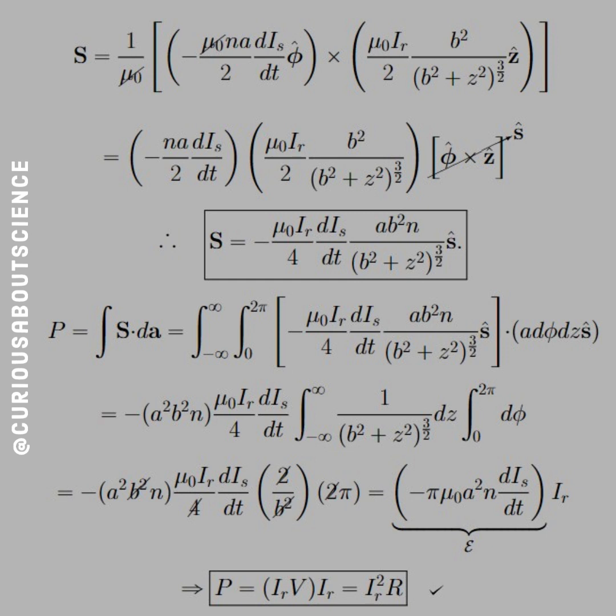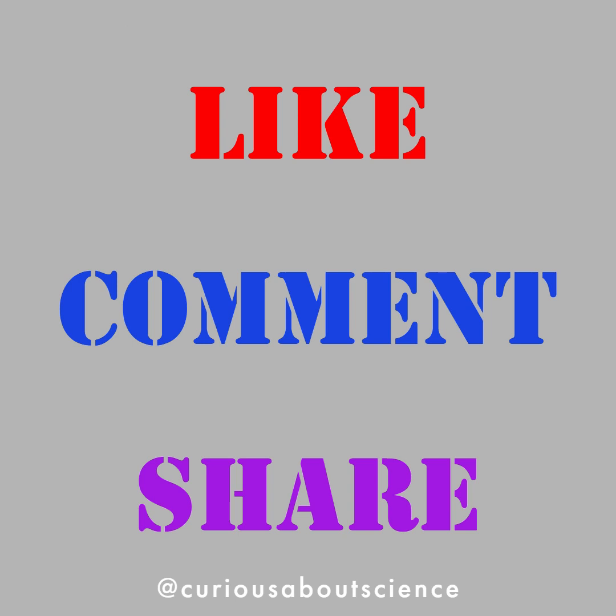Which, if you recall, that was exactly the curly E that we found before in part A. And thus, the power, which is equal to IRV times IR, is equal to... we get the recovered power, and it is consistent.